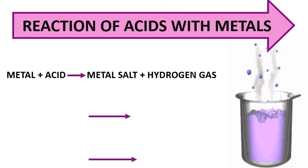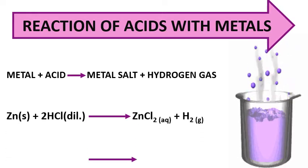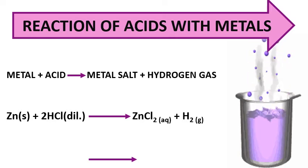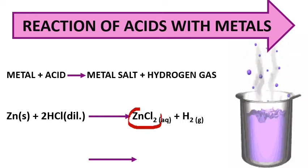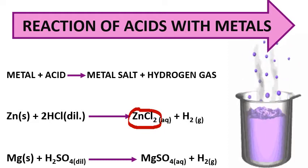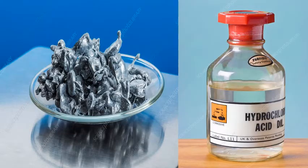For example, jab zinc granules ko HCl mei add kiya jayega, zinc being more reactive will displace H⁺ ion and form zinc chloride and hydrogen gas will be released. Similarly, magnesium can react with sulfuric acid and form magnesium sulfate and hydrogen gas will be released. Different metals react with acids to different extents to form salt and release hydrogen gas.